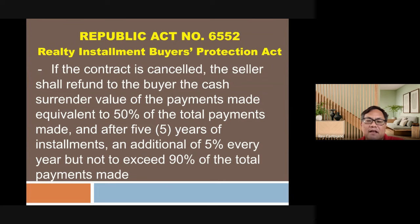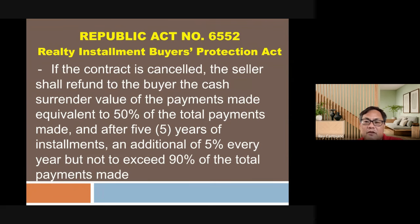In the event of cancellation of the contract, the seller has an obligation to refund the buyer. Many developers violate this — they have buyers who have been paying for several years on installment, yet no refund is made. The rule is that if the developer cancels, they must refund the cash surrender value (CSV) equivalent to 50 percent of the total payments made.